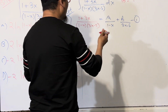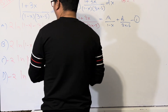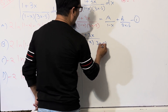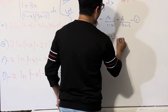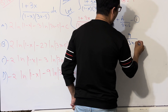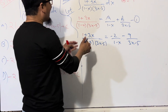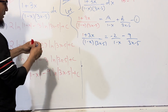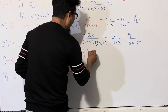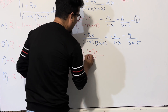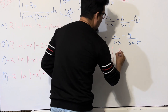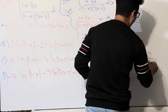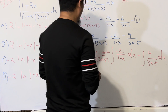This fraction can now be broken into two terms. Taking the integration on both sides: integral of (1 + 3x)/[(1 - x)(3x - 5)] dx = integral of -2/(1 - x) dx + integral of -9/(3x - 5) dx.